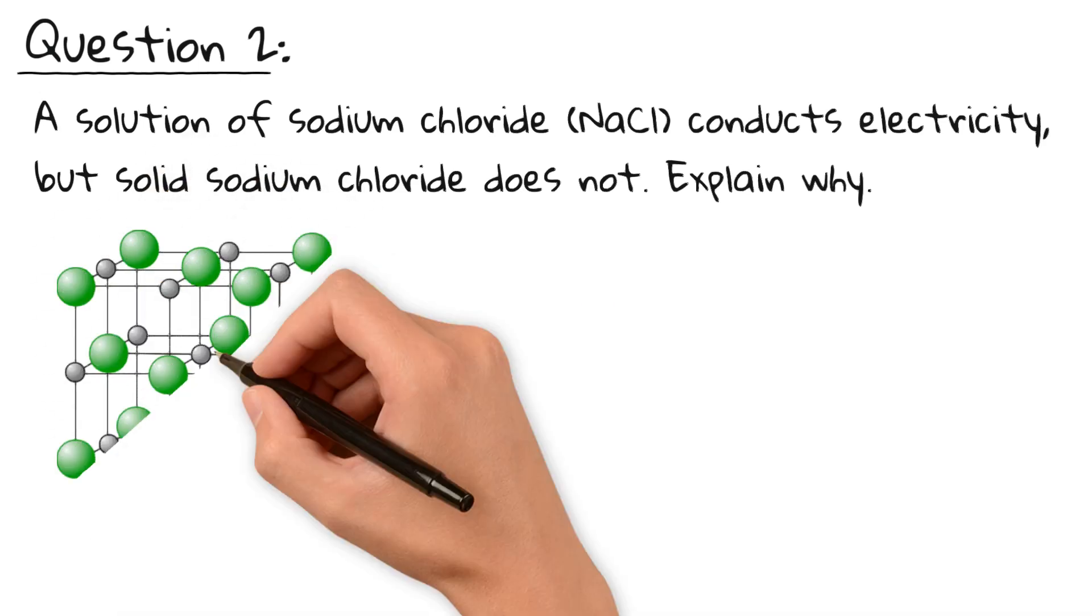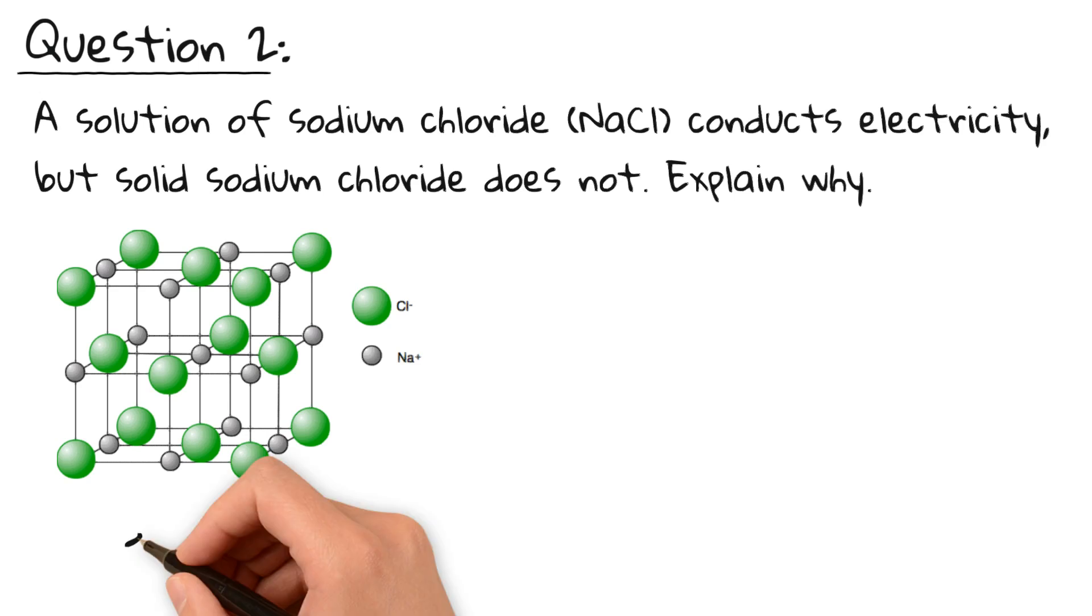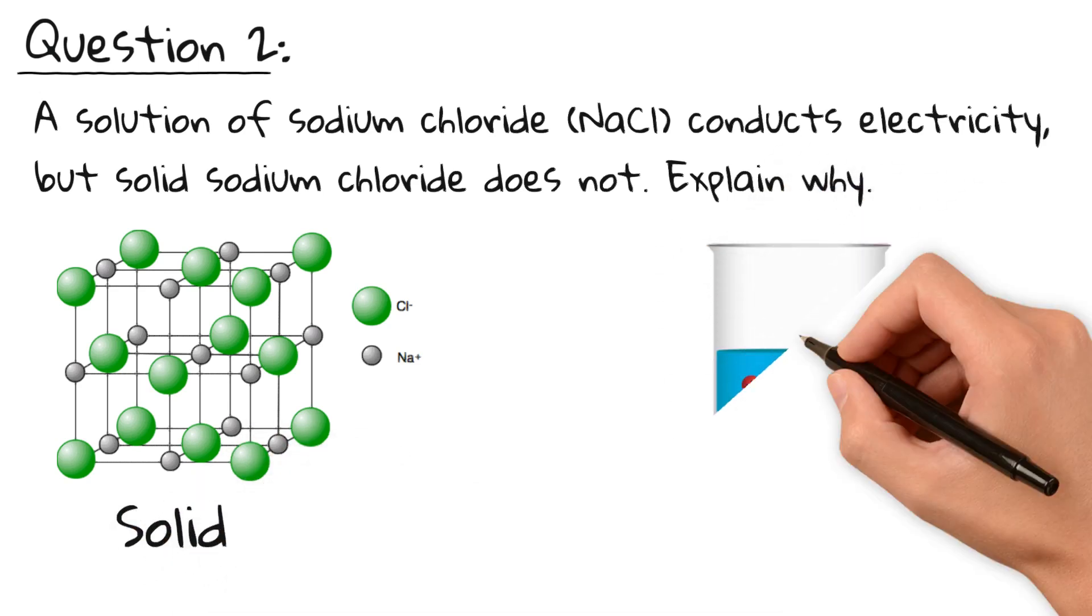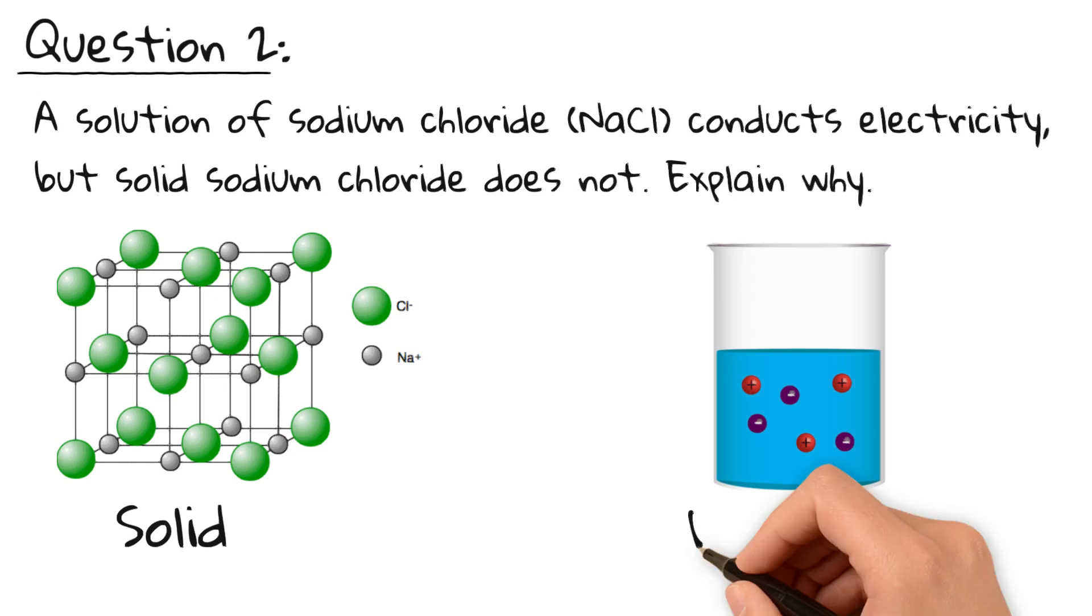In solid sodium chloride, the ions are locked in place in a lattice structure, so they can't move. But when sodium chloride is dissolved in water or melted, the ions are free to move, allowing the solution to conduct electricity.